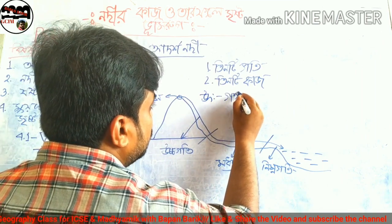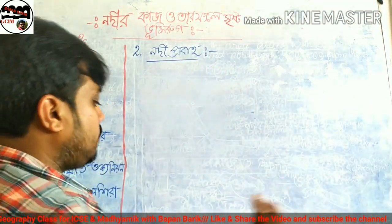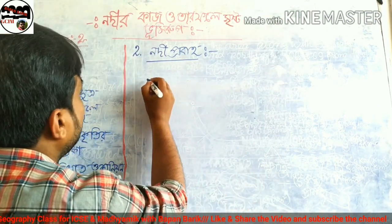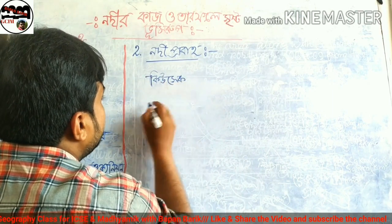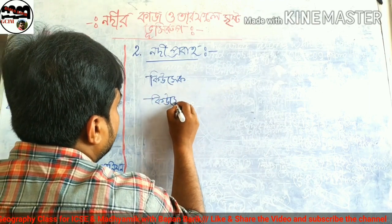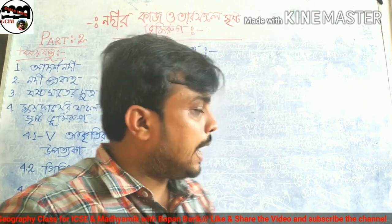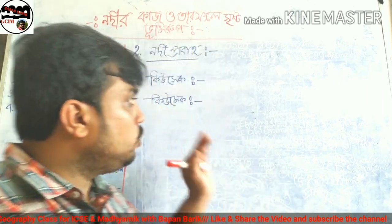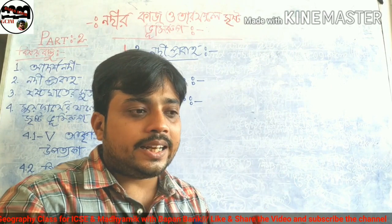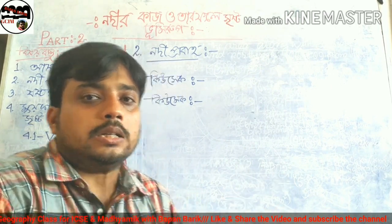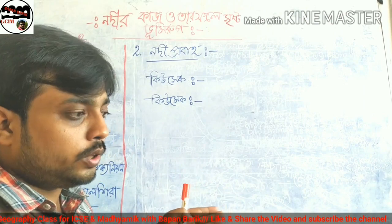Now let's understand the six power law of a river. According to this law, if the speed of a river increases by a certain factor, its erosional capacity increases by six times that factor. This is why speed is so critical to understanding river work.